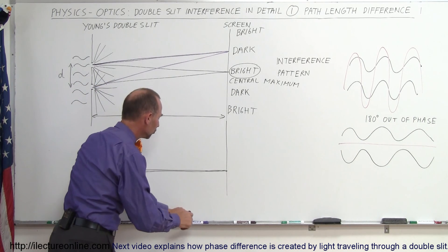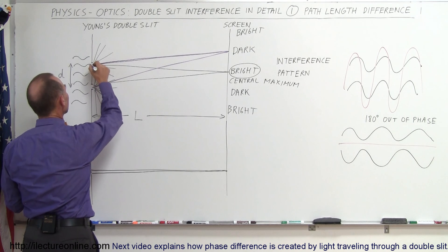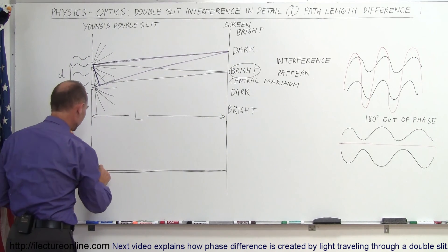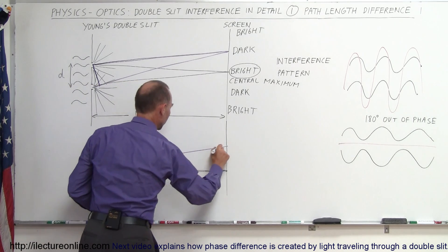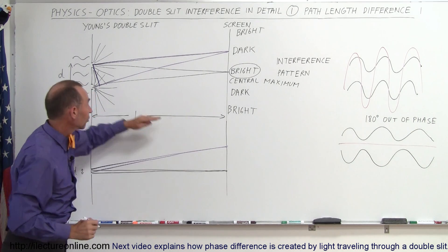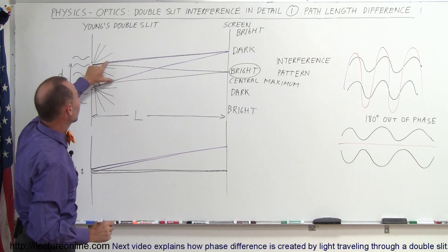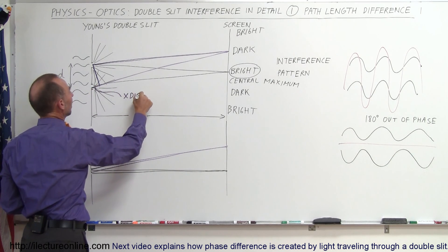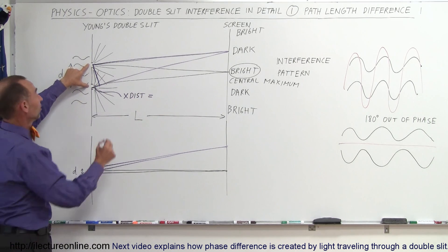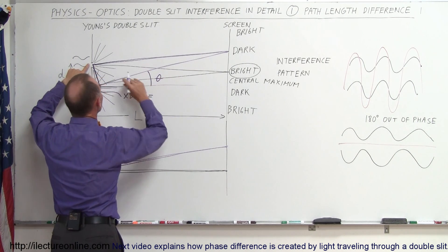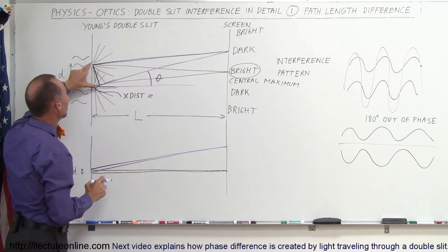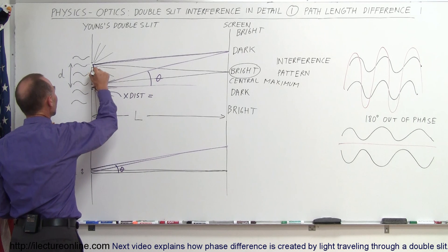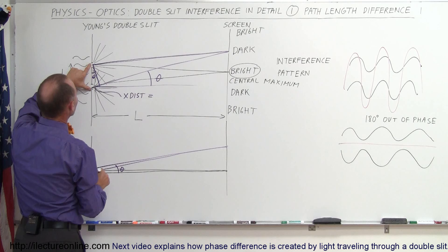To calculate that extra distance, draw a line perpendicular to one ray from the point on the other ray. From that perpendicular point onward, the two rays travel exactly the same distance — again, because these lines are essentially parallel given how small the slit separation is compared to the screen distance. So the extra distance is just the small segment between the two slits along the perpendicular. If D is the distance between the two slits and theta is the angle these two rays make with the horizontal, this extra distance is the opposite side with D as the hypotenuse.